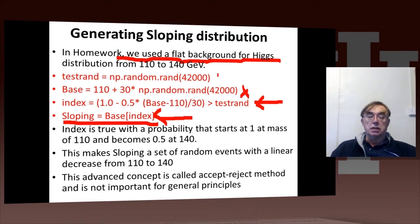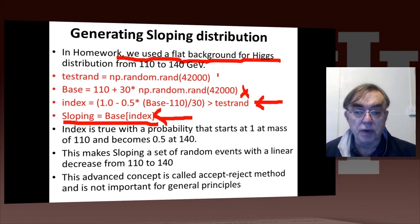So the index statement, the third red statement, takes this function 1 minus 1 half into base minus 110 over 30. What's that? 1 minus 1 half times that linear function of base. That is something which starts off at 1 at 110, and if I plug in 140, I get 1 half.